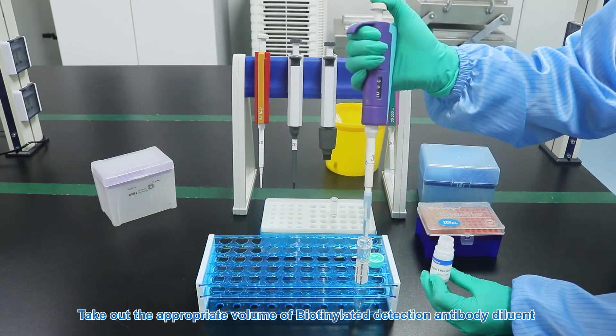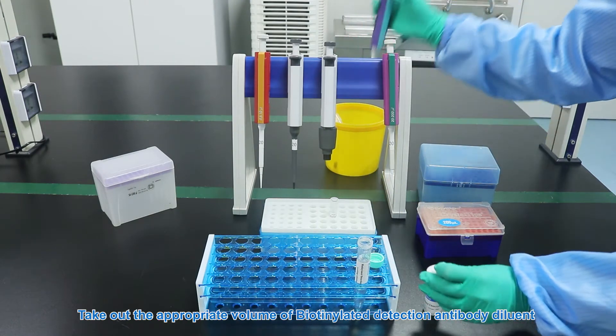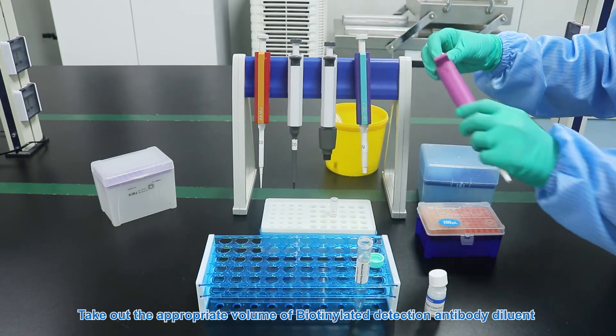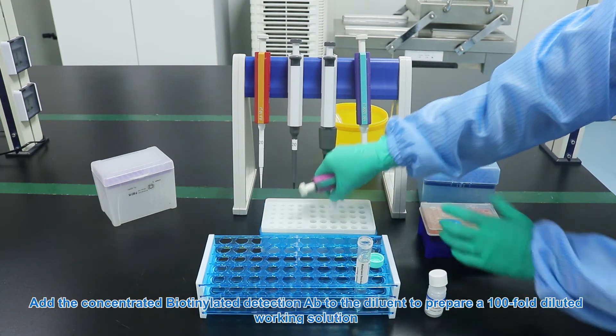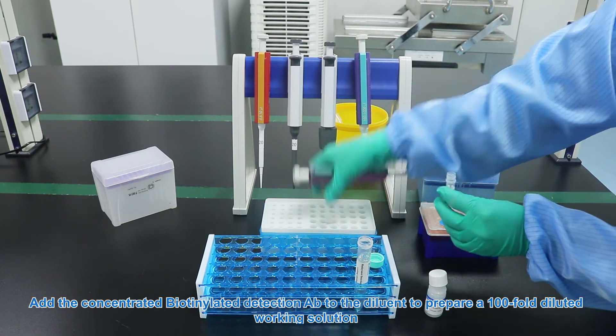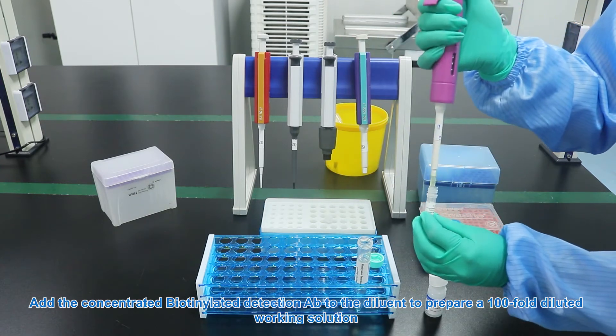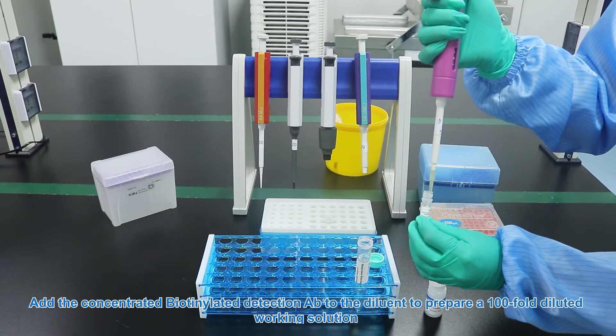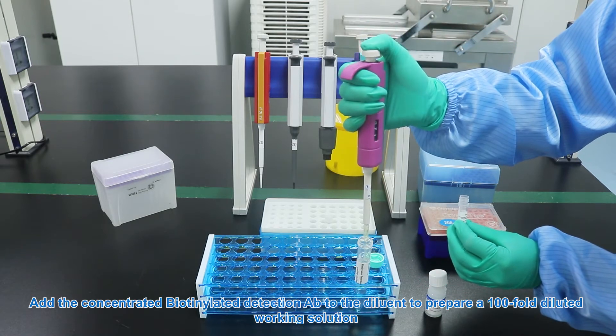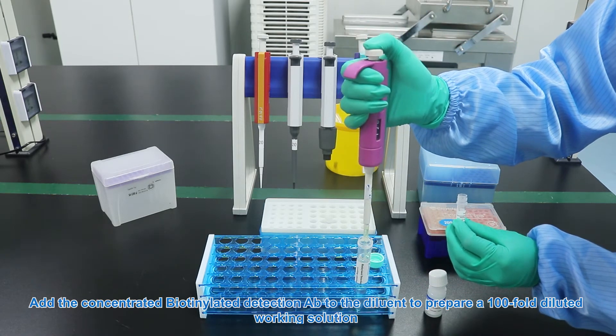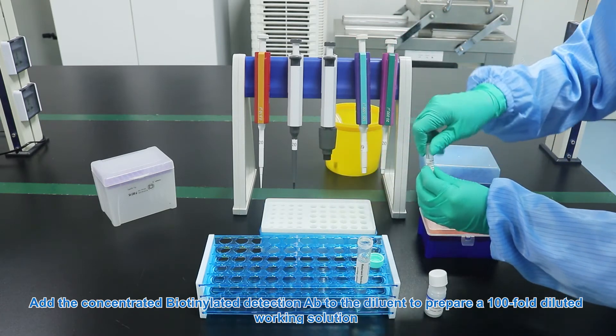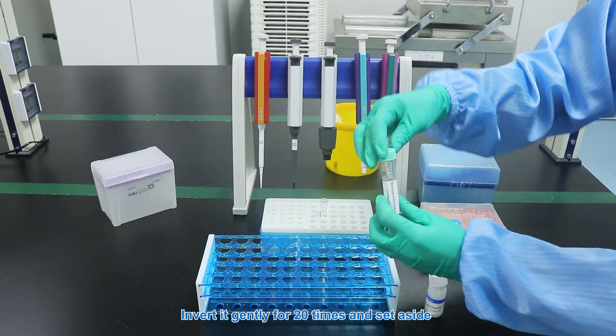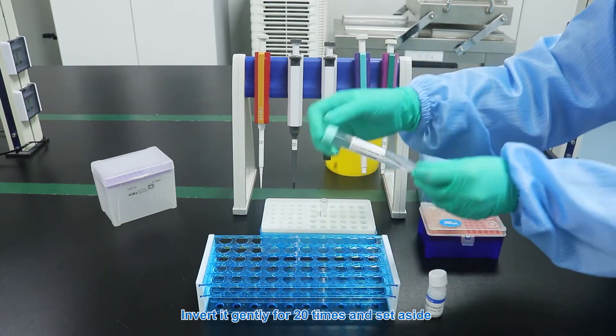Take out the appropriate volume of biotinylated detection antibody diluent. Add the concentrated biotinylated detection antibody to the diluent to prepare a 100-fold diluted working solution. Invert it gently for 20 times and set aside.